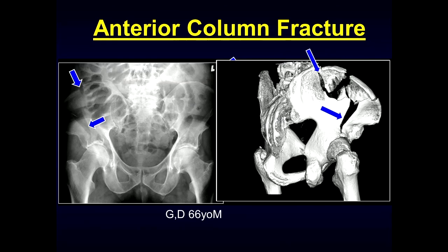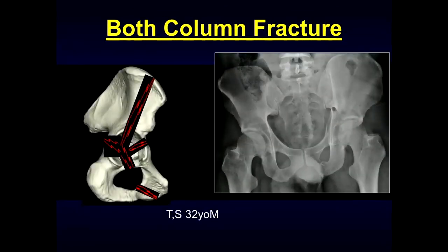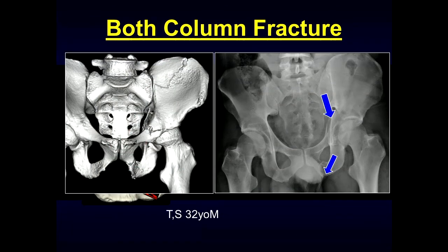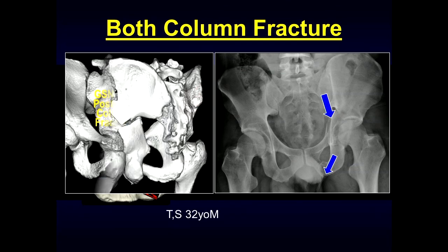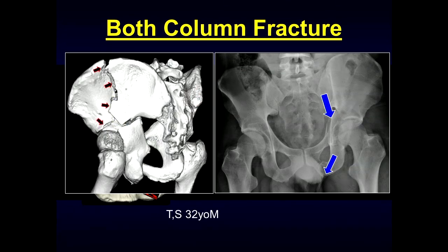You can also get both-column fractures. We see involvement of the acetabulum, the obturator ring, and on CT we can see the anterior column fracture as well as involvement of the posterior column as it involves the sciatic notch. Looking from the side, we can see the anterior column portion and then the posterior column fracture.